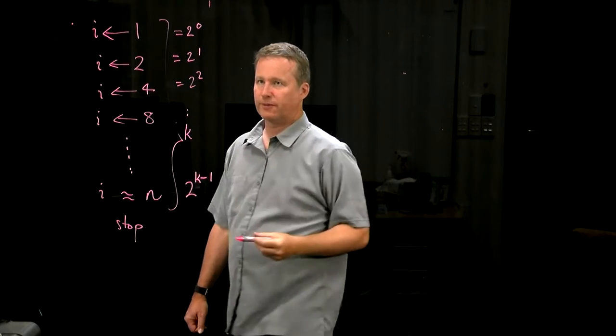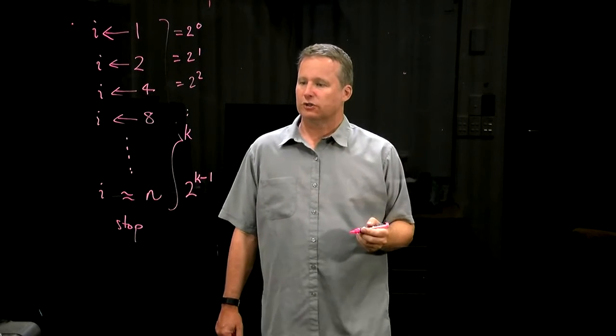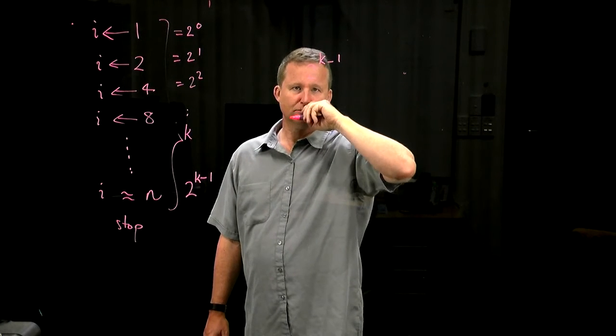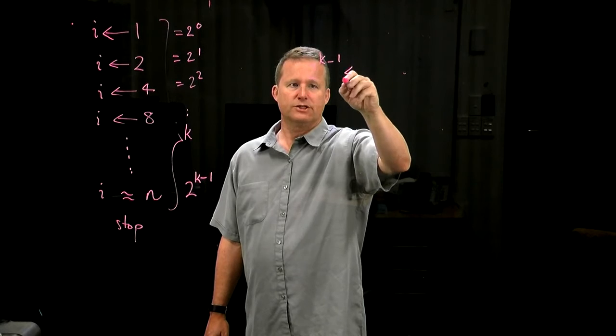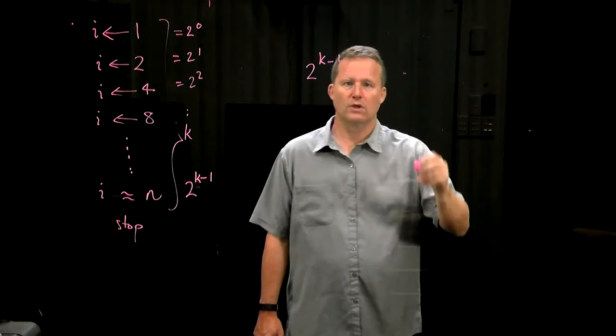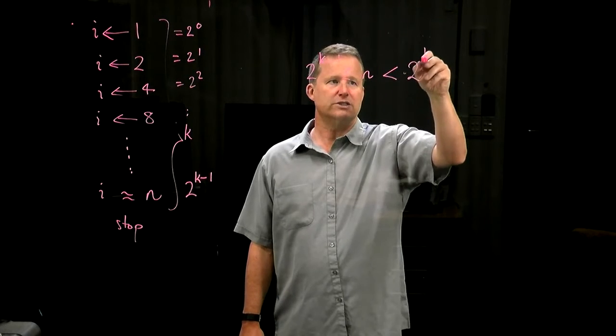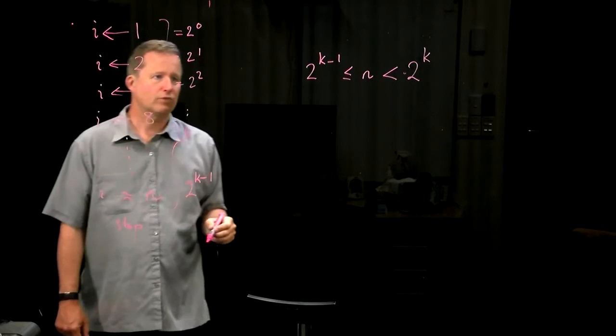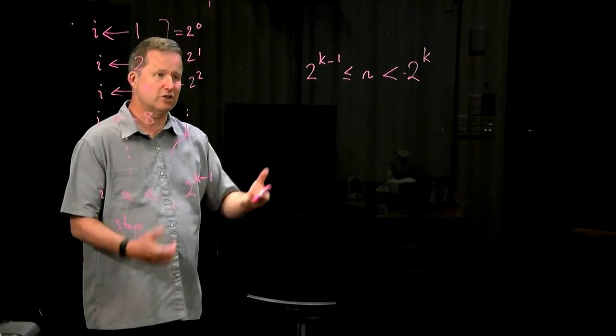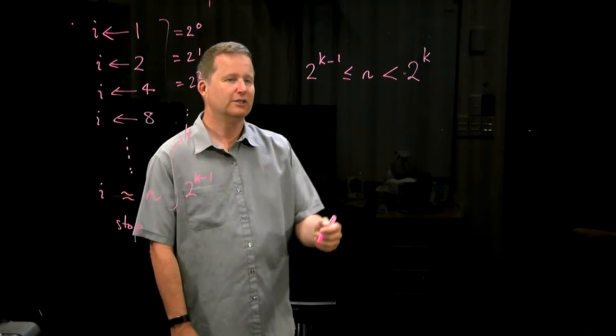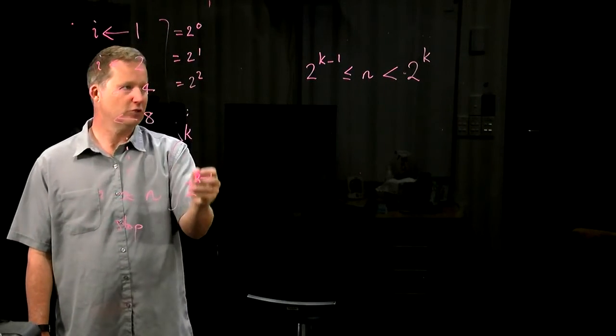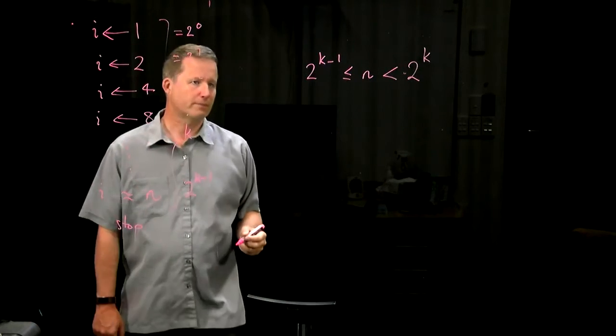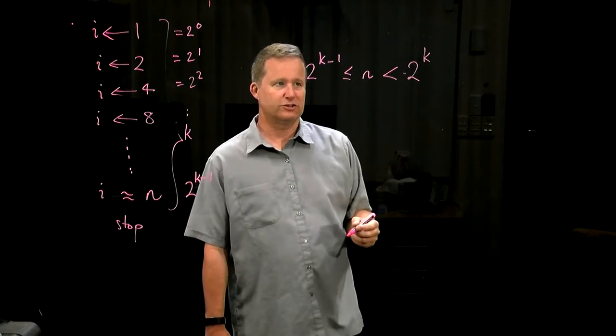So, it's a number such that 2 to the k-1 is less than or equal to n, but if I went one further, 2 to the k is definitely too big. It's the largest number k that satisfies, it's the only number k, in fact, that satisfies that property. n is squashed between 2 powers of 2, consecutive powers of 2. So, it's that number, that's the definition of what k is.